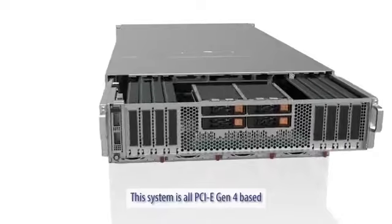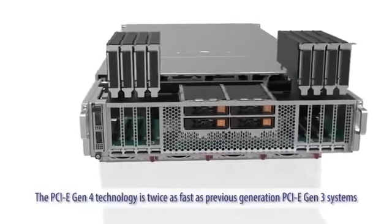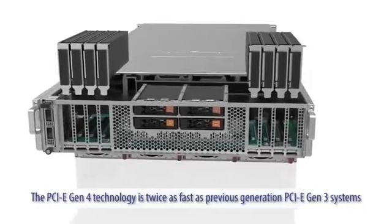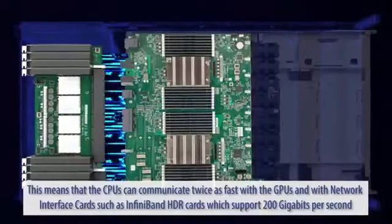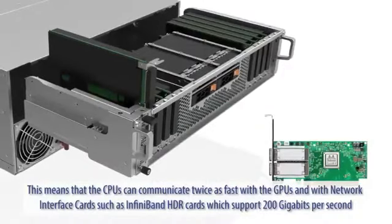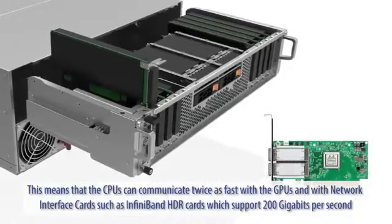This system is all PCIe Gen 4 based. The PCIe Gen 4 technology is twice as fast as previous generation PCIe Gen 3 systems. This means that the CPUs can communicate twice as fast with the GPUs and with network interface cards such as InfiniBand HDR cards which support 200 GB per second.